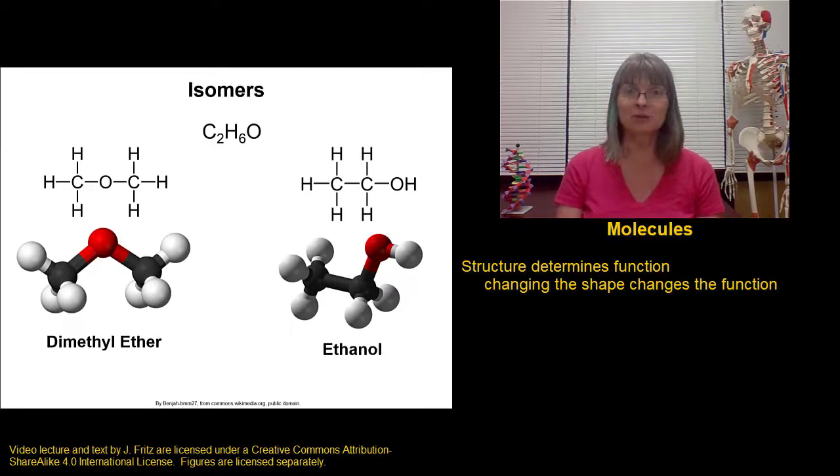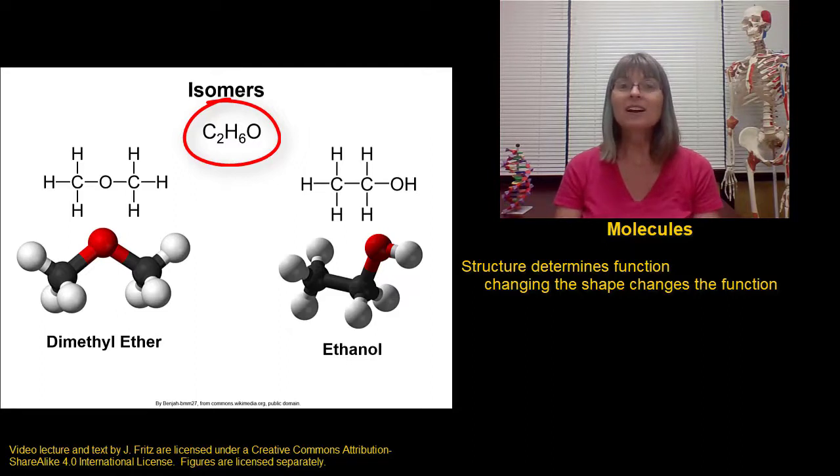Let's look at an example. If we look at the molecular formula C2H6O, we have two carbons, six hydrogens, and an oxygen. But that molecular formula doesn't tell us the arrangement of the atoms. And the arrangement of the atoms is significant. We can arrange the atoms here in a couple of different ways.